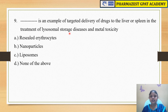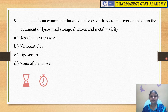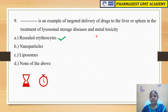The next question is: dash is an example of targeted drug delivery — targeted delivery of drugs to the liver or spleen in the treatment of lysosomal storage diseases and metal toxicity. The options are A) resealed erythrocytes, B) nanoparticles, C) liposomes, and D) none of the above.